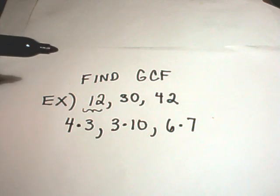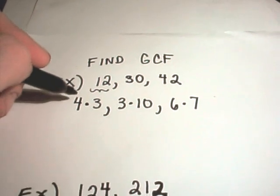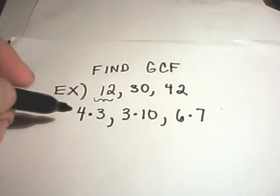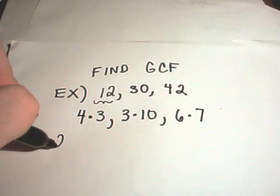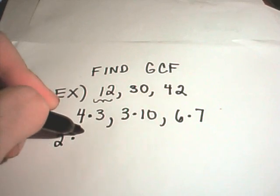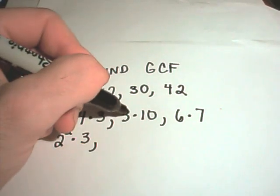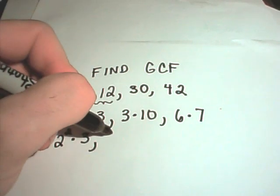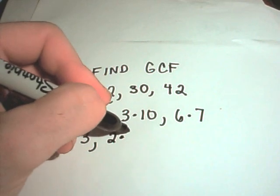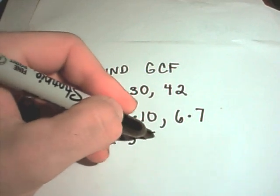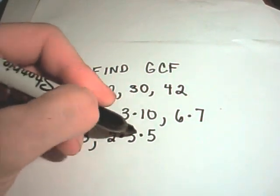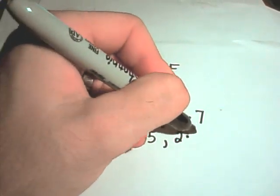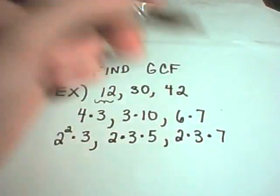Now I can break those down further. I can rewrite 4 as 2 times 2, or 2 squared. You can't do anything else with the 3, so leave it alone. 10 I can write as 2 times 5, so 30 becomes 2 times 3 times 5. Likewise, 6 can be written as 2 times 3, so 42 becomes 2 times 3 times 7.